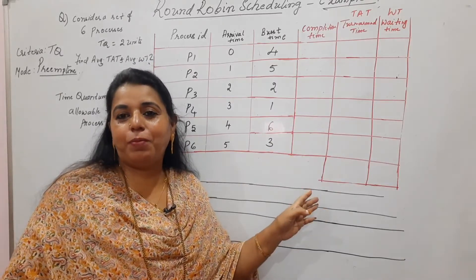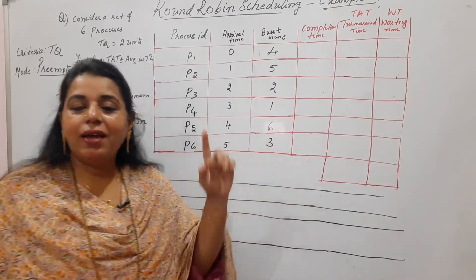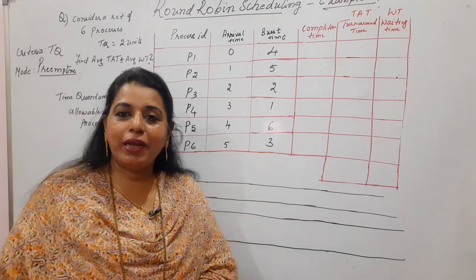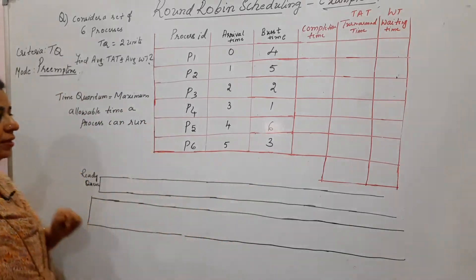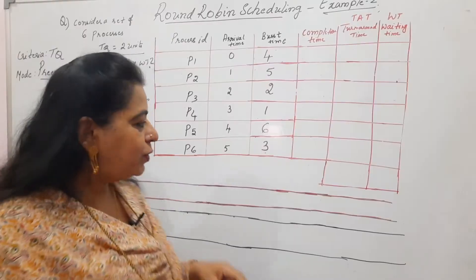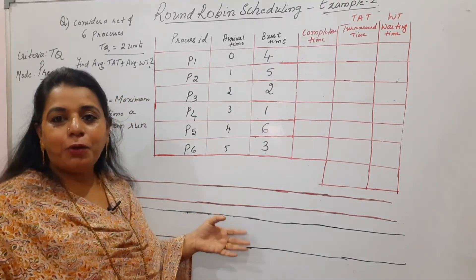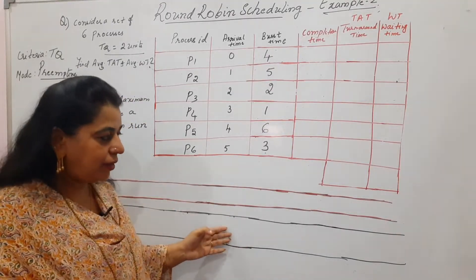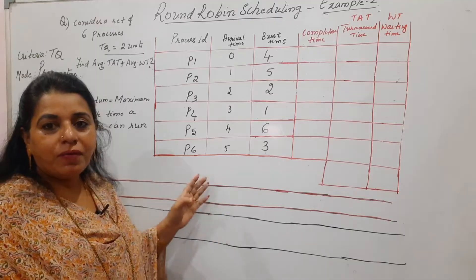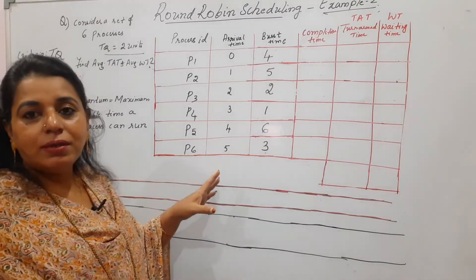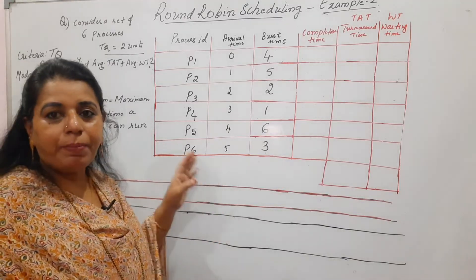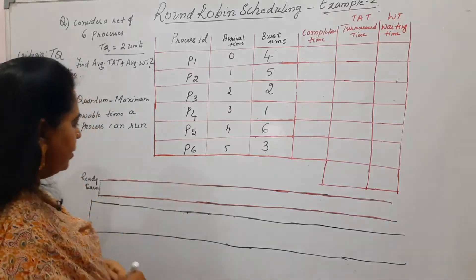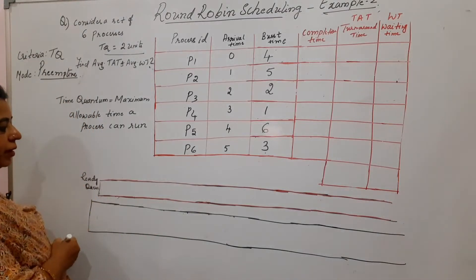This example uses six processes, whereas the previous one had four. To solve this, you need to maintain two queues: the ready queue and the running queue. I already solved a similar example in the previous session, so let's start solving this numerical.